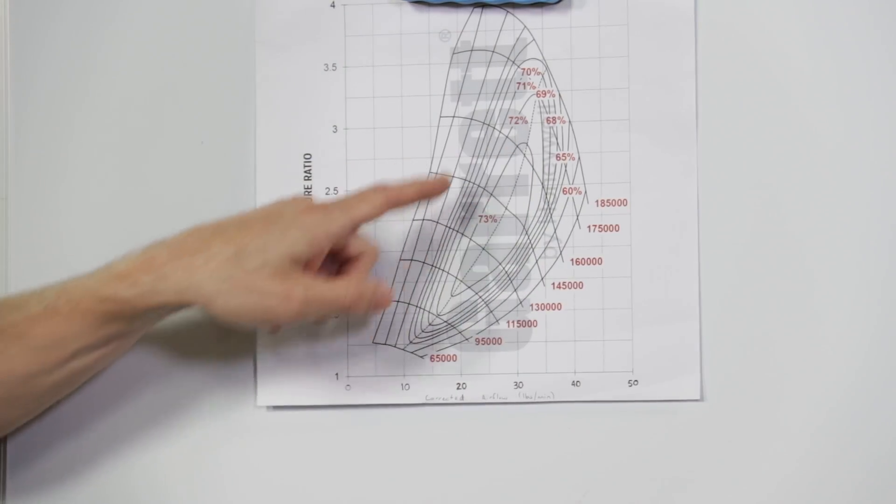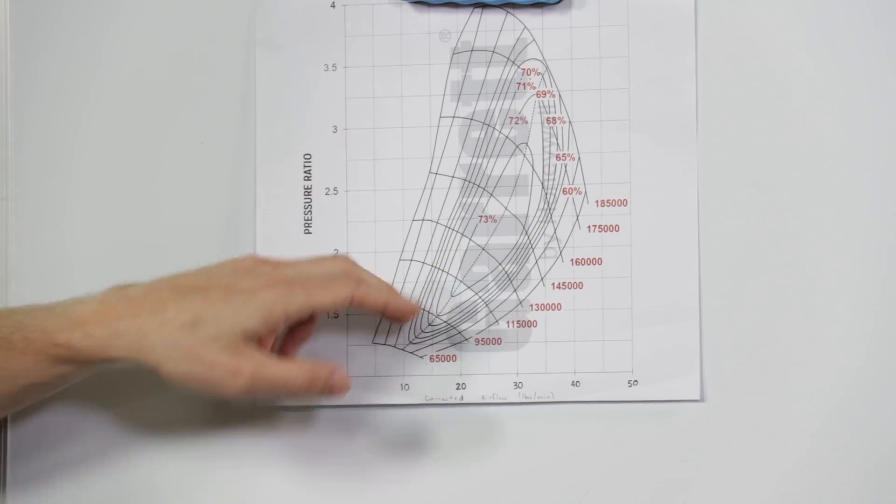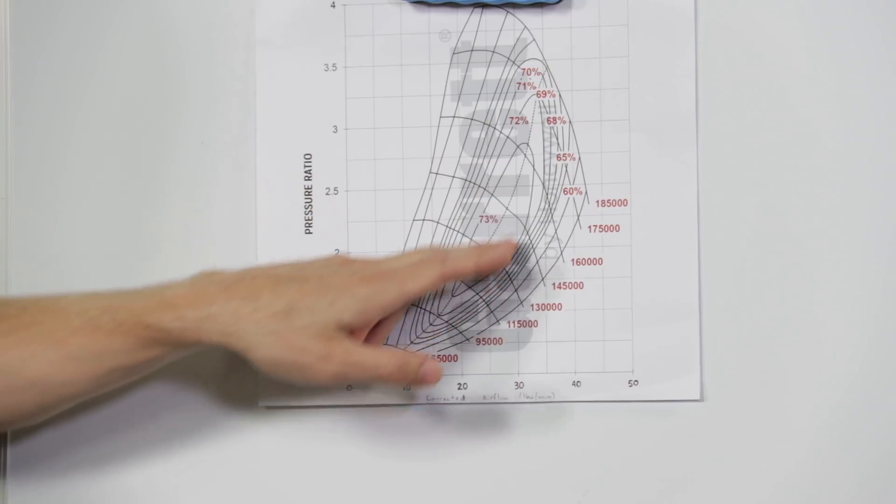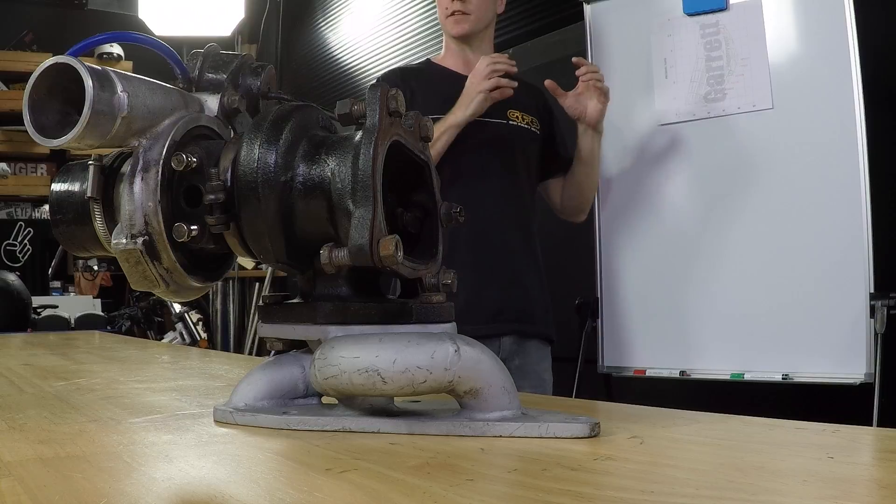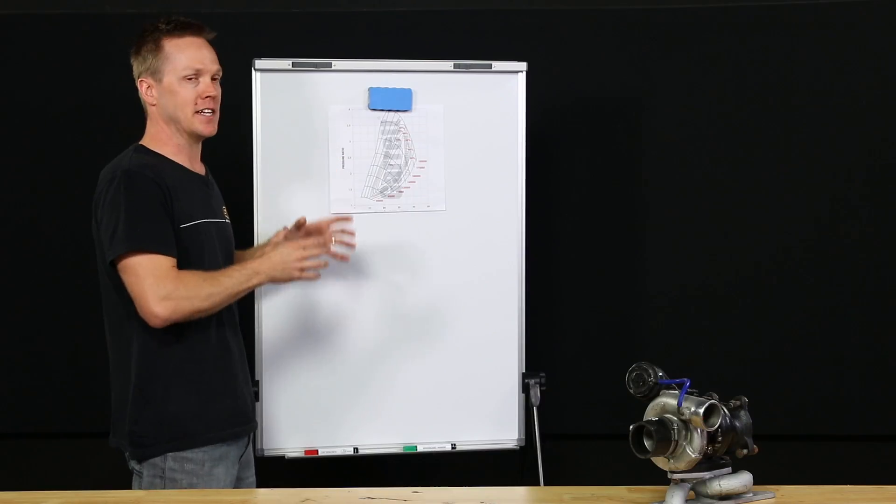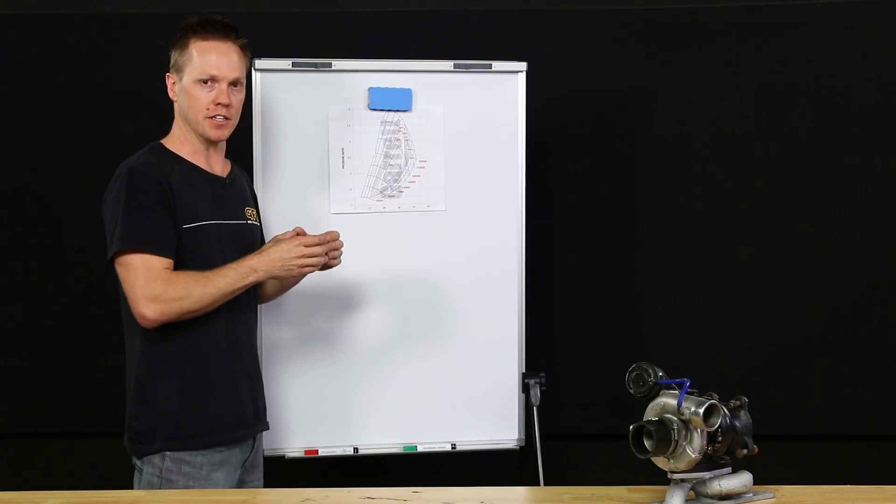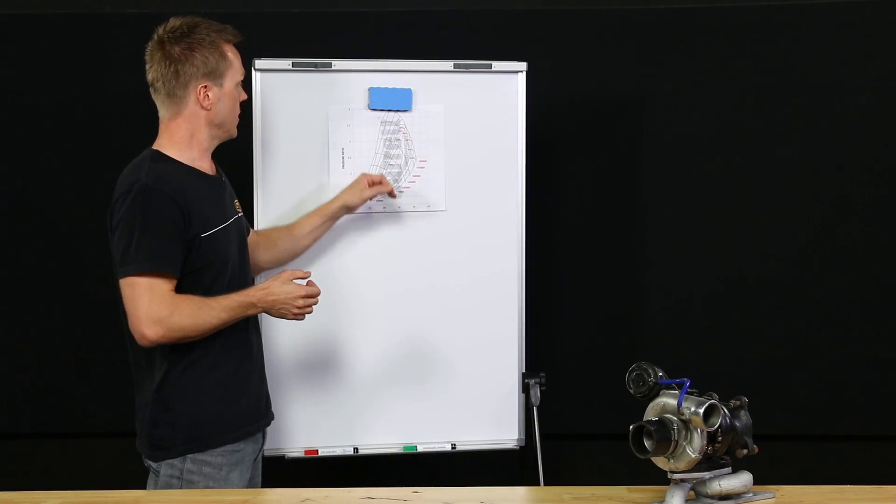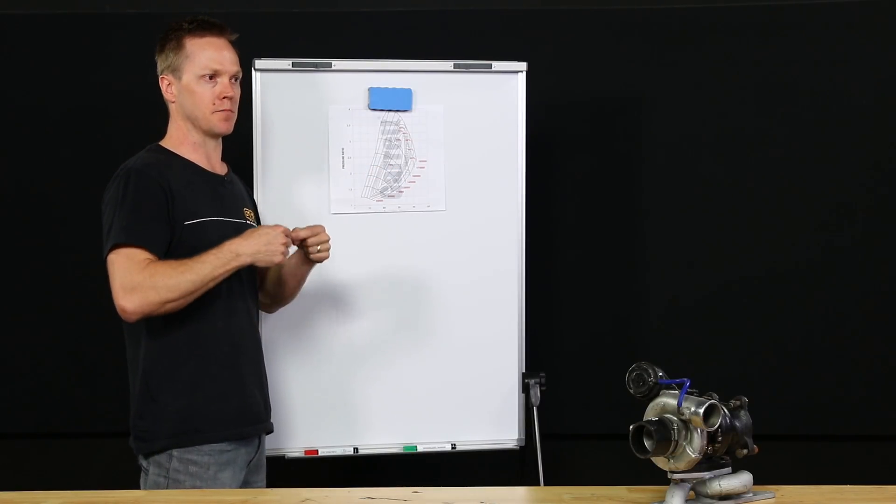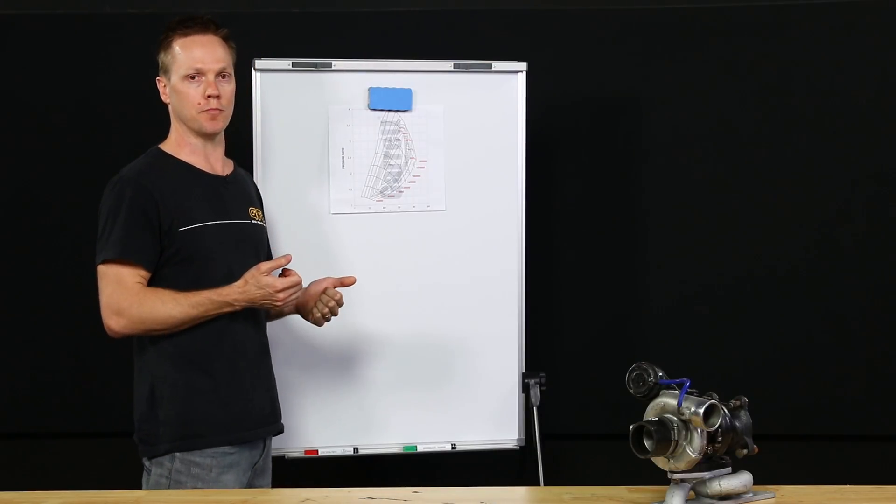The next one, this is the important part. These are the efficiency islands. So you'll see right here in the middle, we have the area of highest efficiency. Now when we're talking about efficiency, this is the one that's going to be hard to wrap your head around. It is basically the adiabatic efficiency of the turbo. Now when you compress air, it naturally heats up.